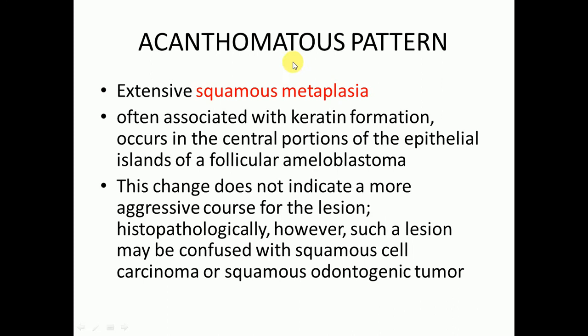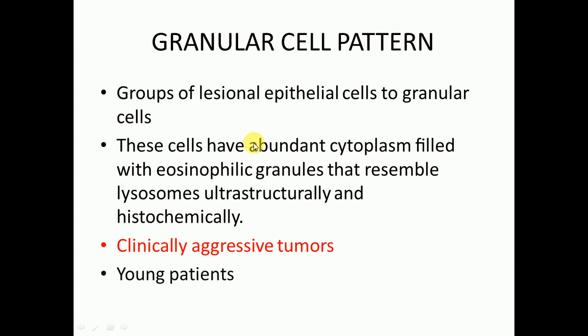In the granular cell pattern, the epithelial cells are converted to granular cells. These cells have abundant cytoplasm filled with eosinophilic granules that resemble lysosomes ultrastructurally and histochemically. These are clinically aggressive tumors and are most commonly present in young patients. If asked which histopathological form of ameloblastoma is most aggressive, the answer is the granular cell pattern, which is most common in young patients.